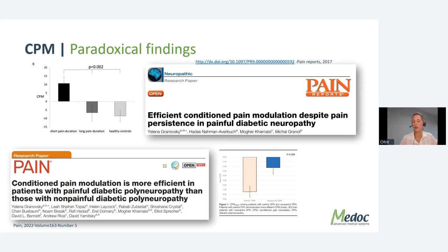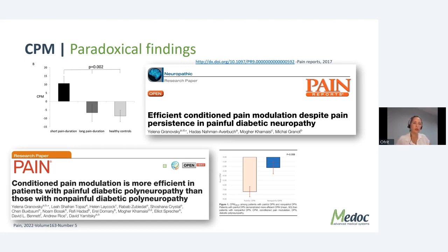Another paradoxical finding: we assumed that the longer you suffer chronic pain, the lower your CPM would go. Granowski from the Technion (2017) looked at the duration of painful diabetic neuropathy and found that patients with short pain duration (less than two years) had less effective CPM — even facilitation — compared to those with a long pain duration. Long-duration pain patients looked very much like healthy controls in terms of CPM.